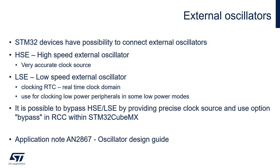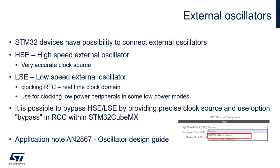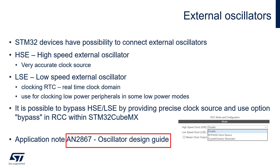As mentioned, an STM32 device can use external oscillators as a clock source. HSE, the High Speed External Oscillator, is used to generate a very accurate clock source for the application. LSE, the Low Speed External Oscillator, has the advantage of providing a low-power but highly accurate clock source to the real-time clock peripheral or other timing functions. It is also possible to bypass external oscillators by providing a precise clock source externally. For that, there is a possibility to select bypass in the RCC configuration. If you would like to know how to design oscillator circuits properly, you can refer to application note AN2867, the Oscillator Design Guide.